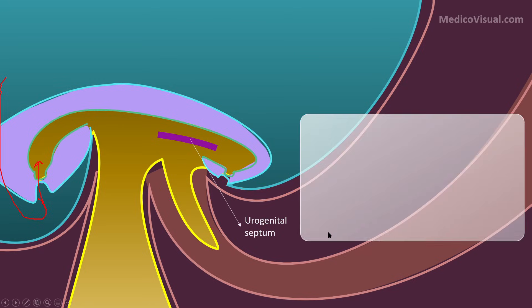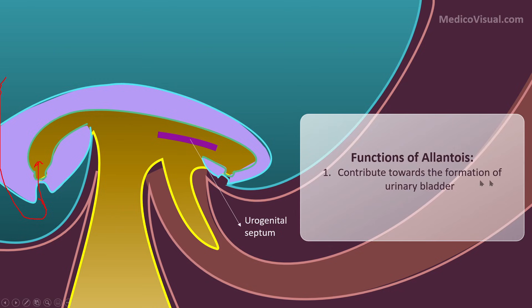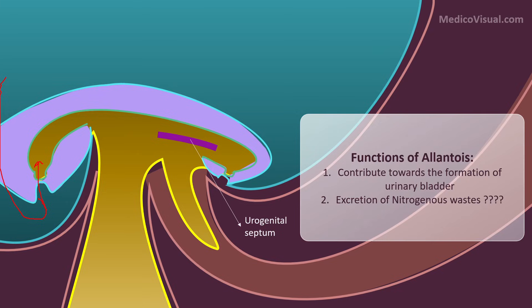In summary, the functions of allantois are: first, it contributes towards formation of the urinary bladder; second, the controversial role in excretion of nitrogenous waste. One theory supports a role in nitrogenous waste excretion; the other considers it an evolutionary vestige. If it is a vestige, the fetus gets rid of nitrogenous waste simply through the placenta.